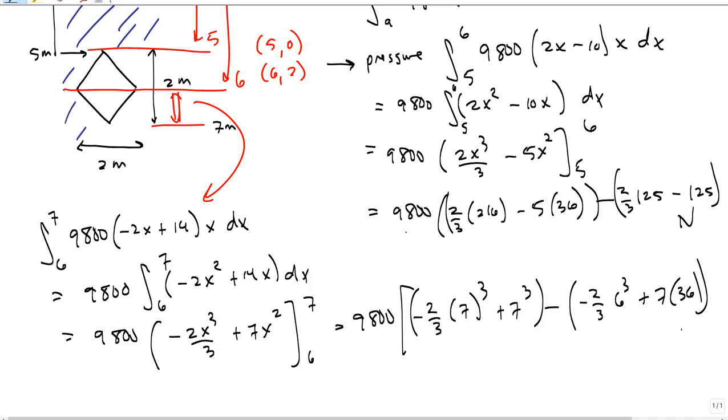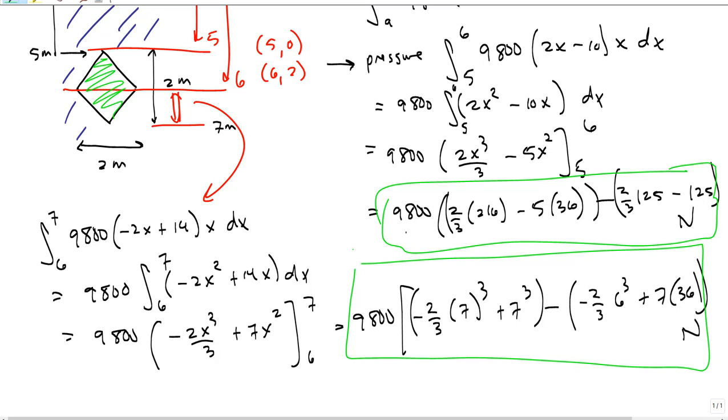Now the total pressure on this whole window is going to be the pressure on the top half plus the pressure on the bottom half. I hope that makes sense.